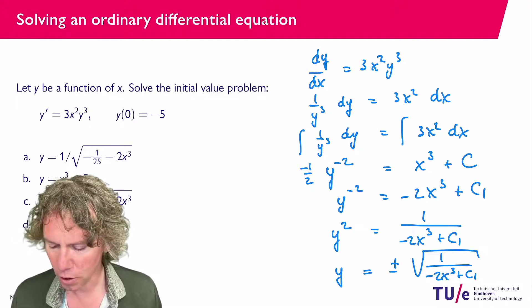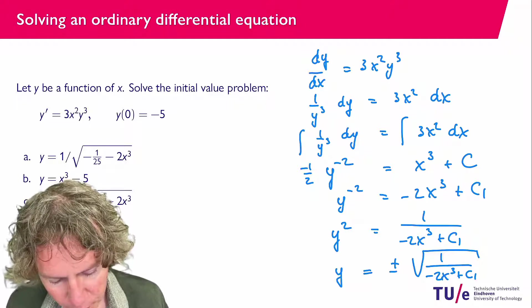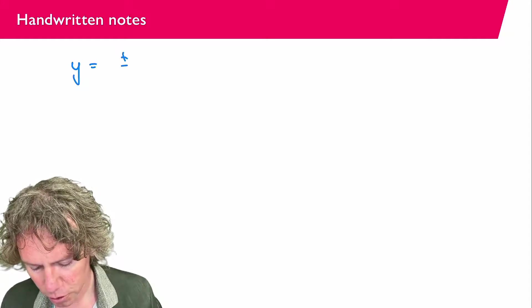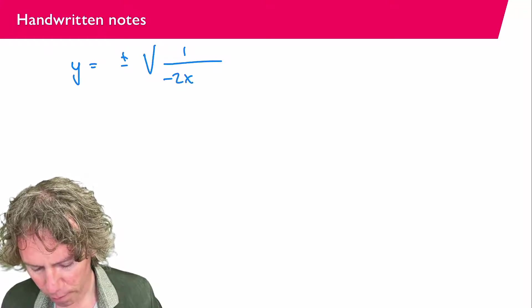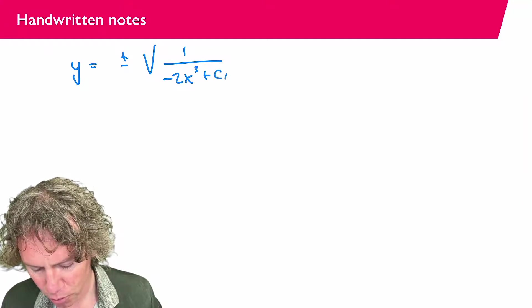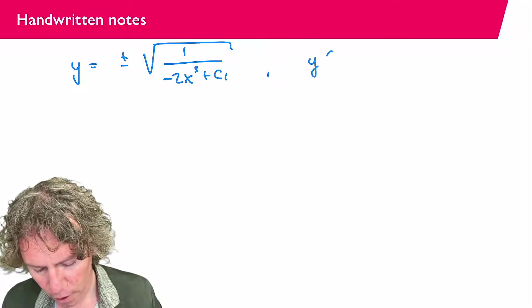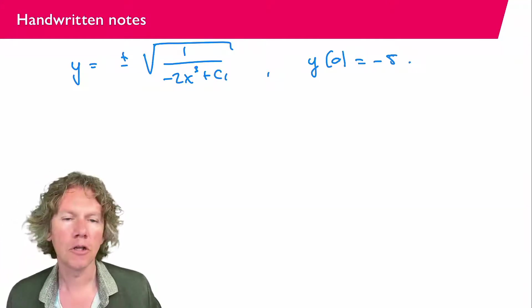So let's see, let me get some more space to write on so what I found is that y equals plus or minus square root 1 over minus 2x to the power 3 plus c1.